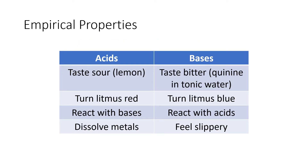Bases tend to have somewhat opposite empirical properties to acids. For instance, acids will taste sour — think about something like a lemon — whereas bases taste bitter. Think about certain herbs, the quinine in tonic water, or even baking soda, which is a very, very weak base. There's a chemical called litmus, actually a plant that gets ground up and then used as an acid-base indicator.